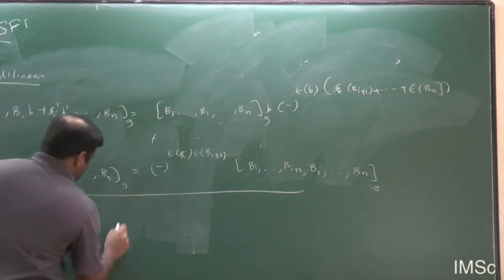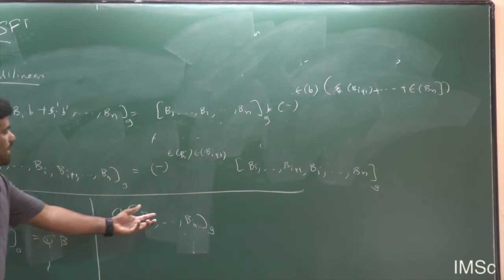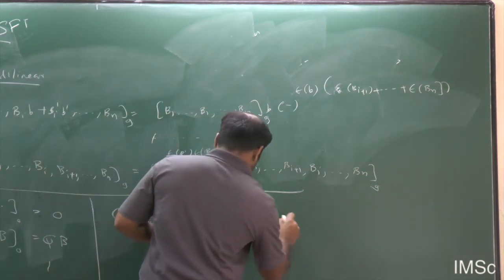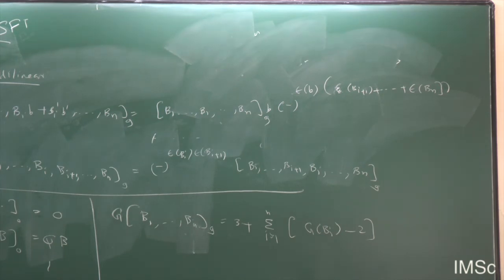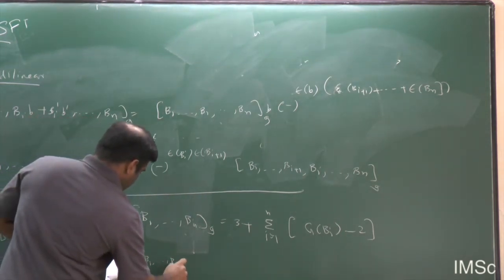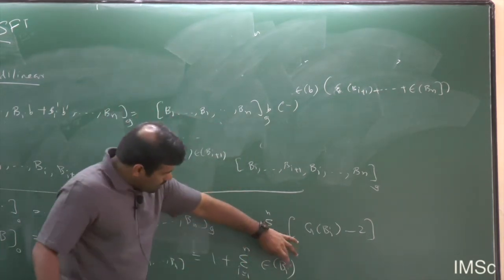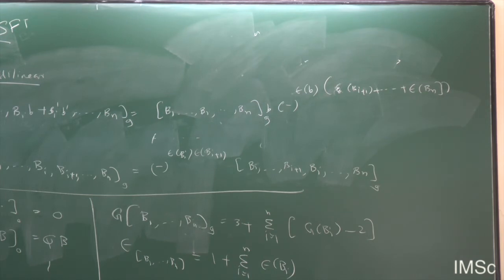I also need to add a genus index g — this index is related to the number of handles in the Riemann surface on which you do the computation to define the string product. The string product for genus 0 with no insertion is defined to be 0, and for a single field insertion it equals Q acting on B. One can find the ghost number of a string product: g([B_1,...,B_n]_g) = 3 + Σ g(B_i) − 2.